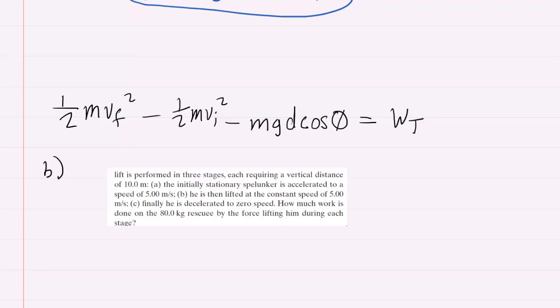So for part B the spelunker is still being pulled for 10 meters so that hasn't changed. Of course his mass is still 80 kilograms. G is still 9.8 meters per second squared. But this time he's traveling at 5 meters per second, so we can say his initial speed is 5 meters per second. But because he is lifted at a constant speed, that means the final speed will also be 5 meters per second.